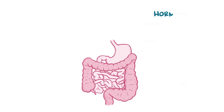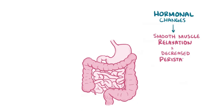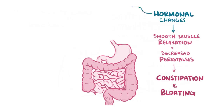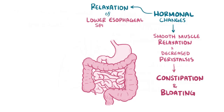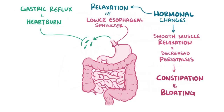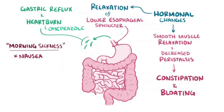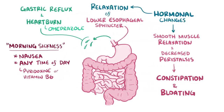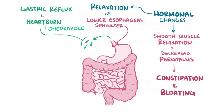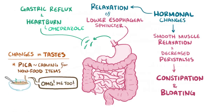In the gastrointestinal tract, hormones cause smooth muscle relaxation and decreased peristalsis, which sometimes leads to constipation and bloating — stool softeners might help with this. It also causes relaxation of the lower esophageal sphincter, which can lead to gastric reflux and heartburn, which can be managed with proton pump inhibitors like omeprazole. Many pregnant women also experience morning sickness — nausea that typically happens early in pregnancy, but can actually happen any time of day and sometimes persist throughout. Pyridoxine, or vitamin B6, can help with the nausea; if not effective, a combination of doxylamine succinate and pyridoxine might do the trick. Tastes can change too, and a classic example is pica, where there's a craving for non-food items like ice, dirt, or starch.